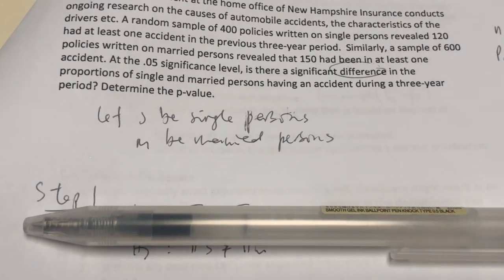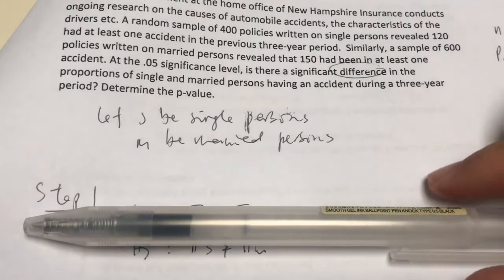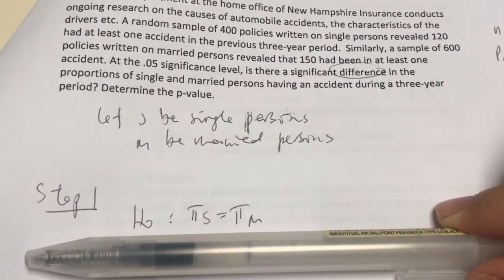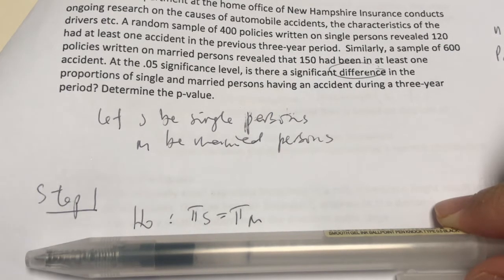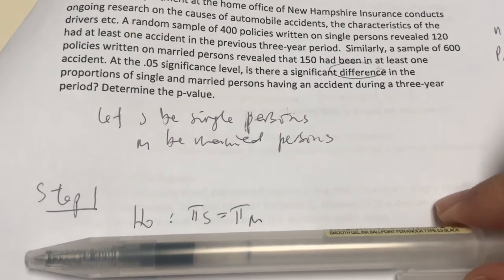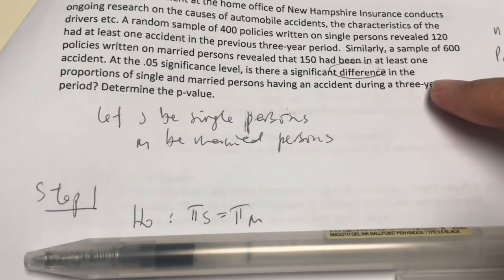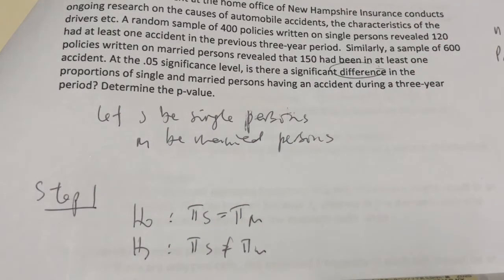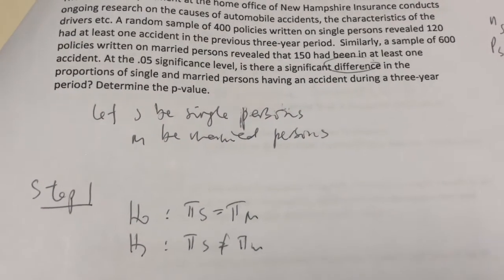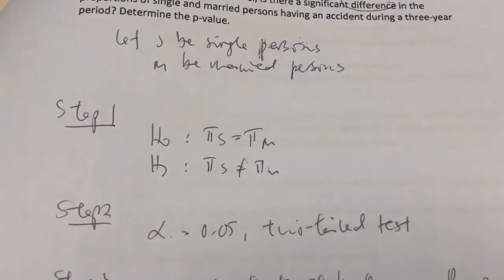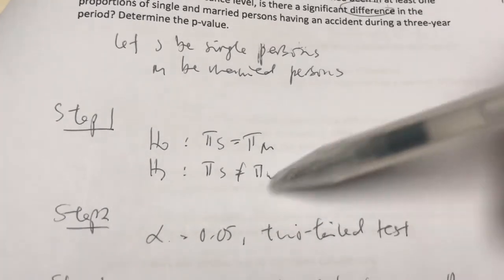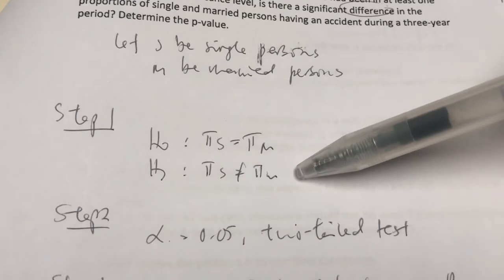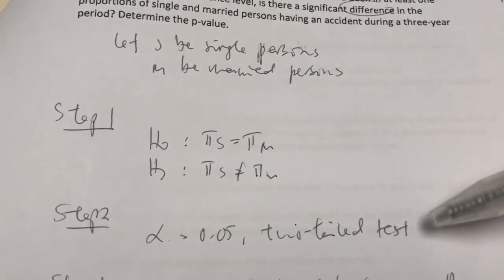Now let's write the hypothesis. The null hypothesis always assumes there's no difference between the two population proportions. So we write that the proportion of single people involved in an accident is exactly the same as the proportion of married people. From the question, the key word is 'difference,' which means not equal to — that is our alternate hypothesis. The level of significance or alpha is given as 5%, and from our alternate hypothesis, we can identify that our test is a two-tailed test.